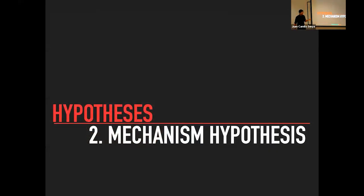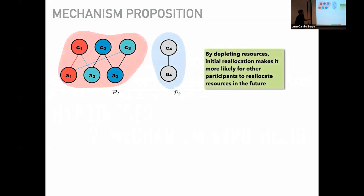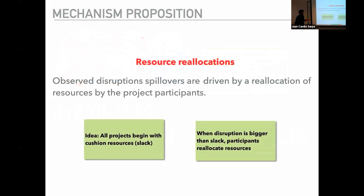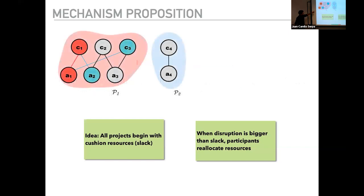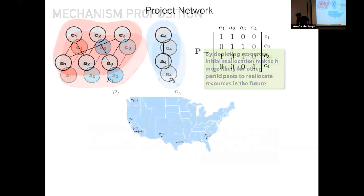To prove our hypothesis we also need to show the mechanism through which this is happening — is it really because of resource reallocation? How can we observe that in the data? Resources are not reported; we don't observe worker counts or time allocations. So what we want to show is that the observed disruptions are actually driven by a reallocation of resources, and that when the disruption is bigger, it is more likely participants will reallocate resources, which in turn makes it more likely for other participants to reallocate as well.